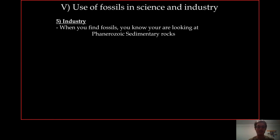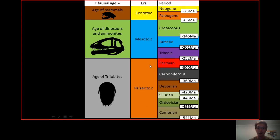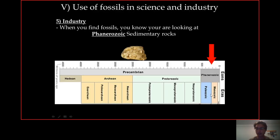One fundamental thing you need to know about fossils is that if you find fossils, you are most likely looking at Phanerozoic sedimentary rocks. The Phanerozoic is a geological stage that is bigger than the eras. Looking at your stratigraphic column, the Phanerozoic encompasses all of them — the Paleozoic, Mesozoic, and Cenozoic inside.